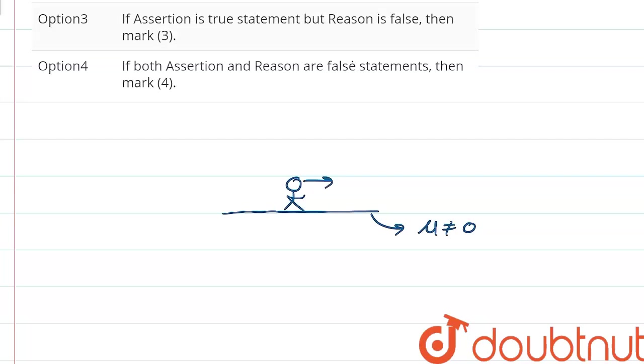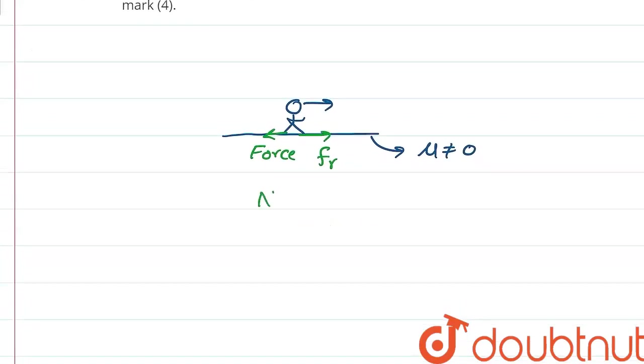As the man goes in this direction, his foot will apply a force in this direction, and hence the frictional force will work in the opposite direction of this force. This is the condition, but we can see that the man is walking and not sliding. There is no sliding.